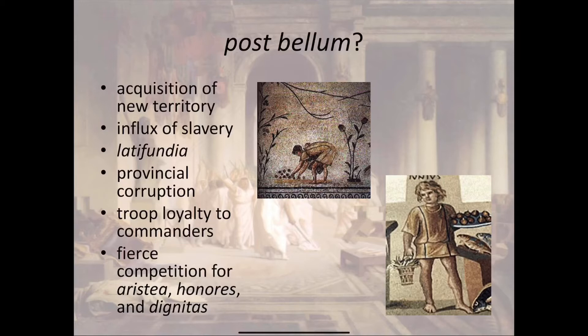For a long time Rome was a very class-based society. There was a group called the Patricians — those who could trace their ancestry back to the first senators of Rome — and then everybody else, called Plebeians. Over time plebeians won various concessions from patricians, so that by the late Republican period the difference between them wasn't that remarkable. However, some plebeians had become just as wealthy as the patricians, and there was still a massive difference between the wealthy aristocratic classes and everybody else.